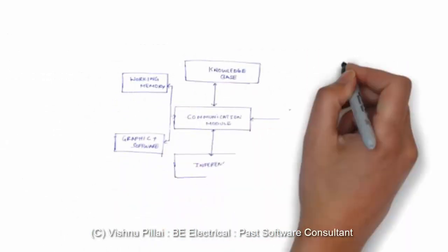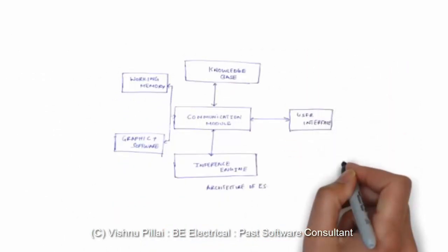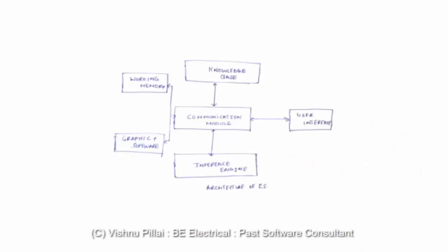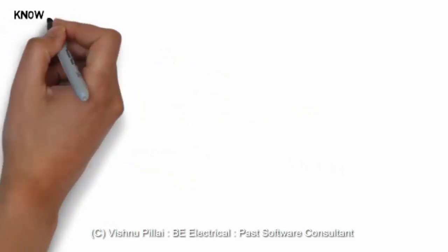This diagram shows the working of an expert system. There is a communication module, a knowledge base, and an inference engine. There is also a working memory, graphic software, and a user interface. The user interface is used by the user to interact with the expert system, make changes to the knowledge base, add new information, and retrieve information for a specific problem from the knowledge base.